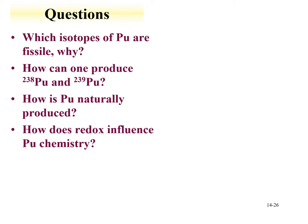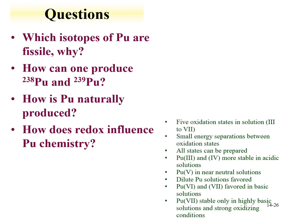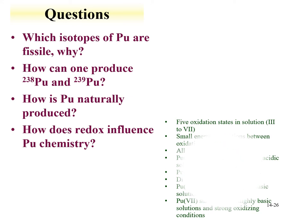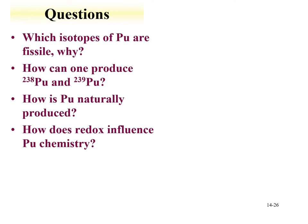How does redox chemistry influence plutonium? Plutonium has oxidation states in solution from +3 to +7 (though +7 is difficult to make). Small energy gaps between oxidation states mean all states can coexist simultaneously in solution. General trends: lower oxidation states are more stable in acidic solutions; the pentavalent state is more stable in neutral solutions and is favored in dilute solutions because it can undergo disproportionation; higher oxidation states are favored in basic solutions. Pu⁷⁺ is stable only in highly basic solutions with strong oxidizing conditions.